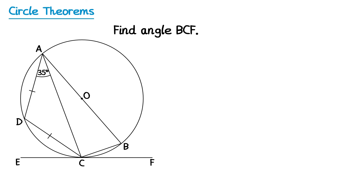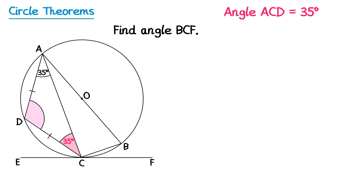In this next question we've been asked to find angle BCF, but this time we don't need to give reasons. We do need to show working out still. We're going to start by looking at triangle ACD. We know this is an isosceles triangle because AD and DC are the same length, which means angle ACD is 35 degrees. Next we'll work out angle ADC. Angles in a triangle add to 180 degrees, so 35 plus 35 is 70, and 180 minus 70 gives 110 degrees.